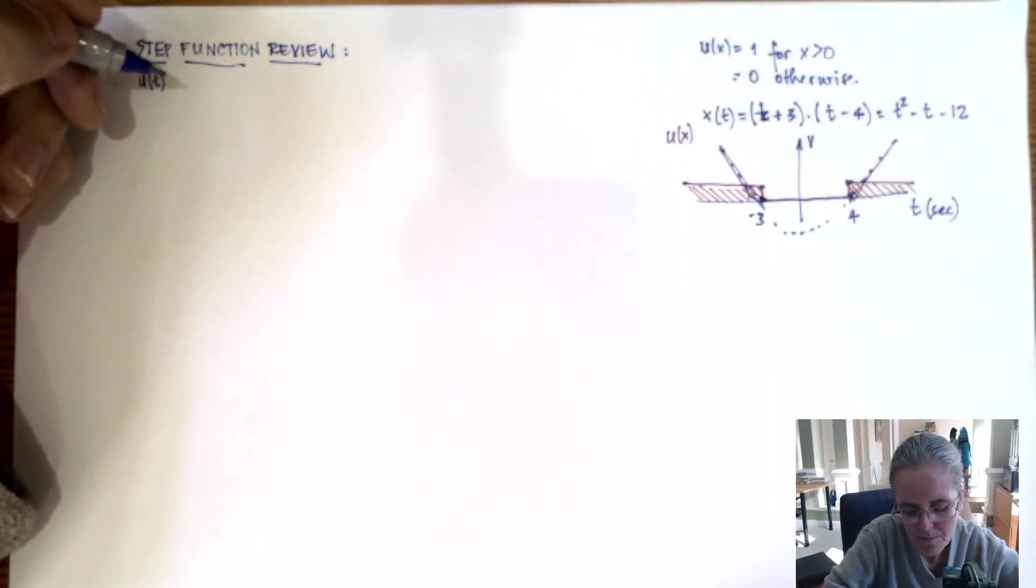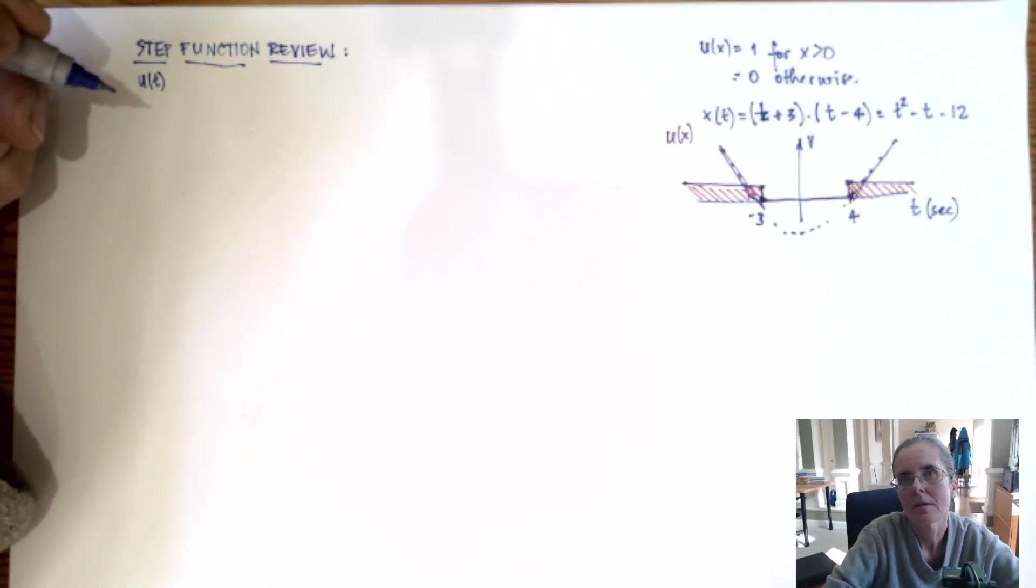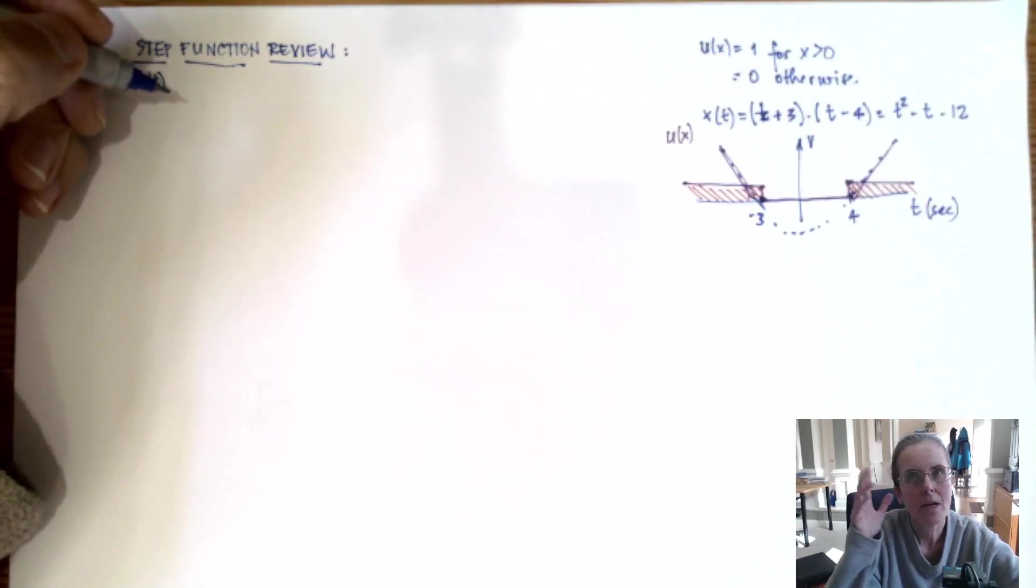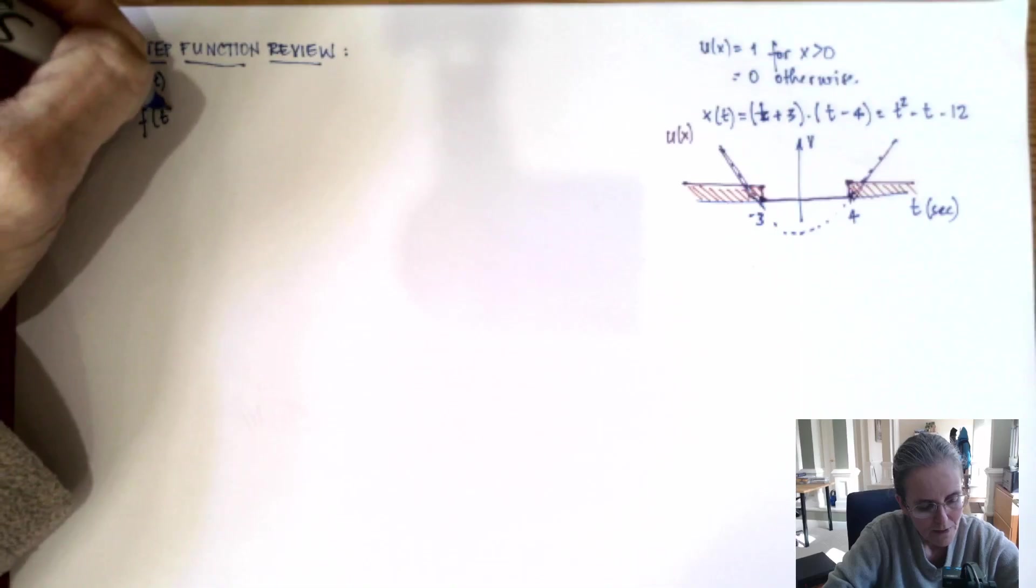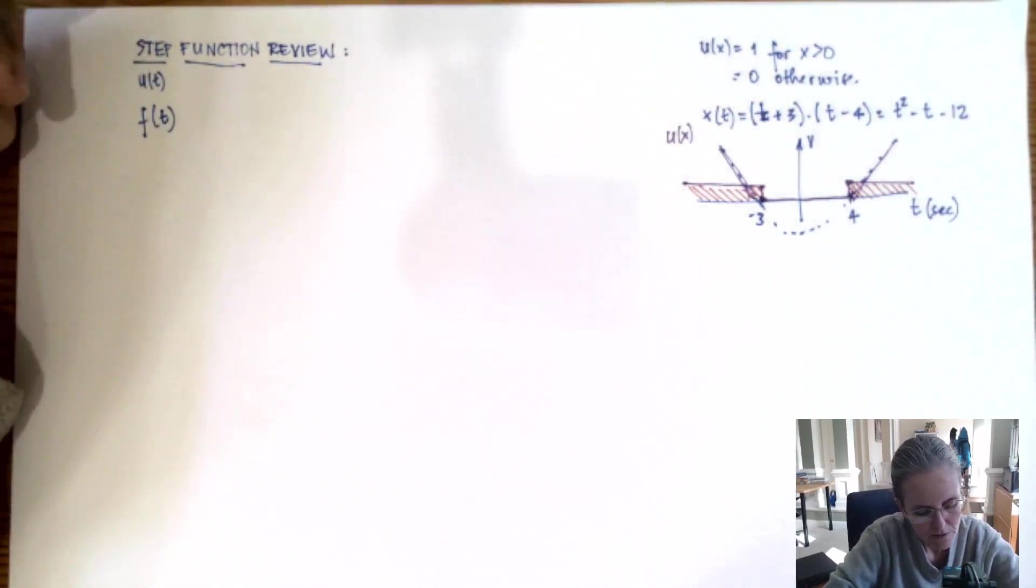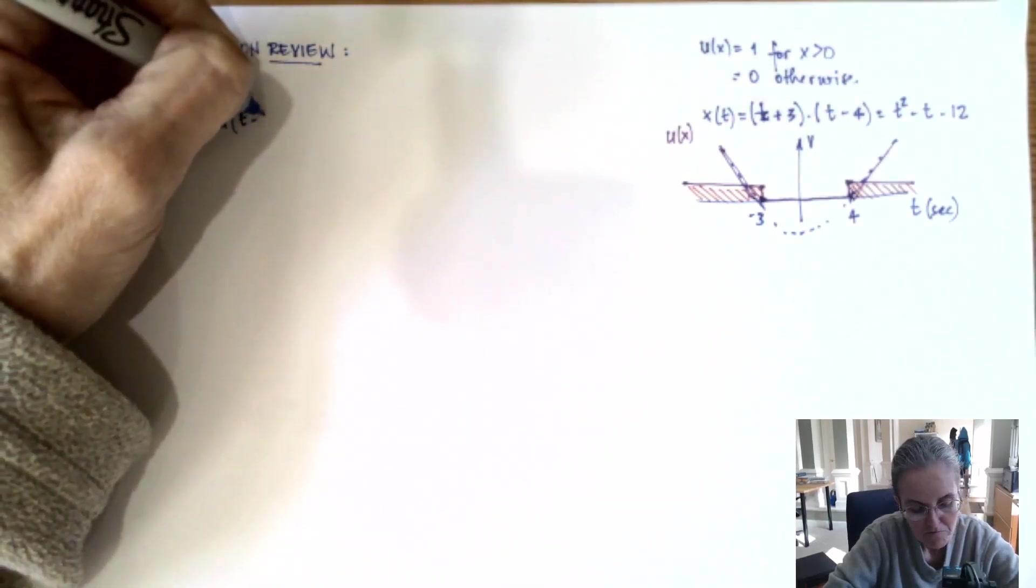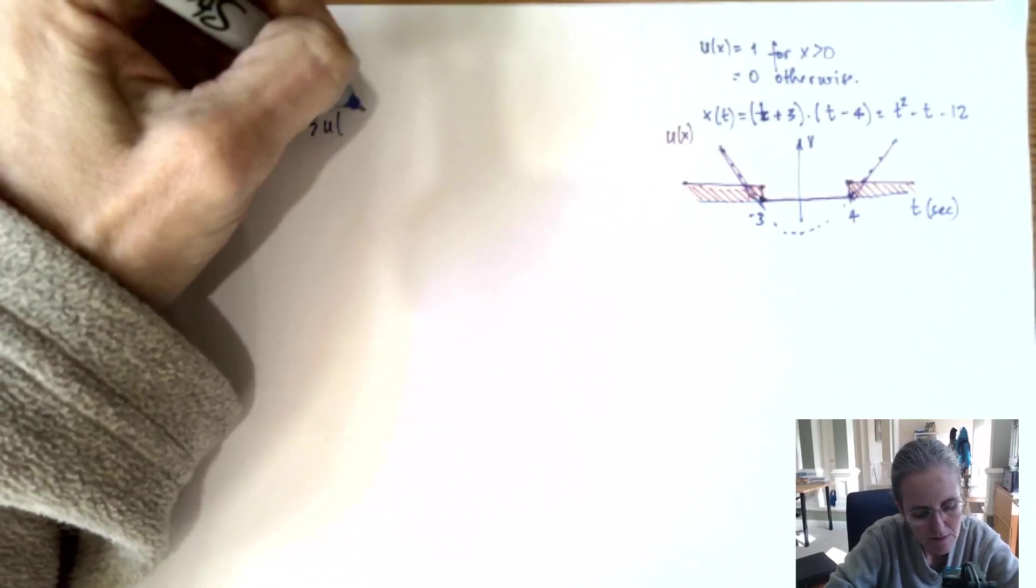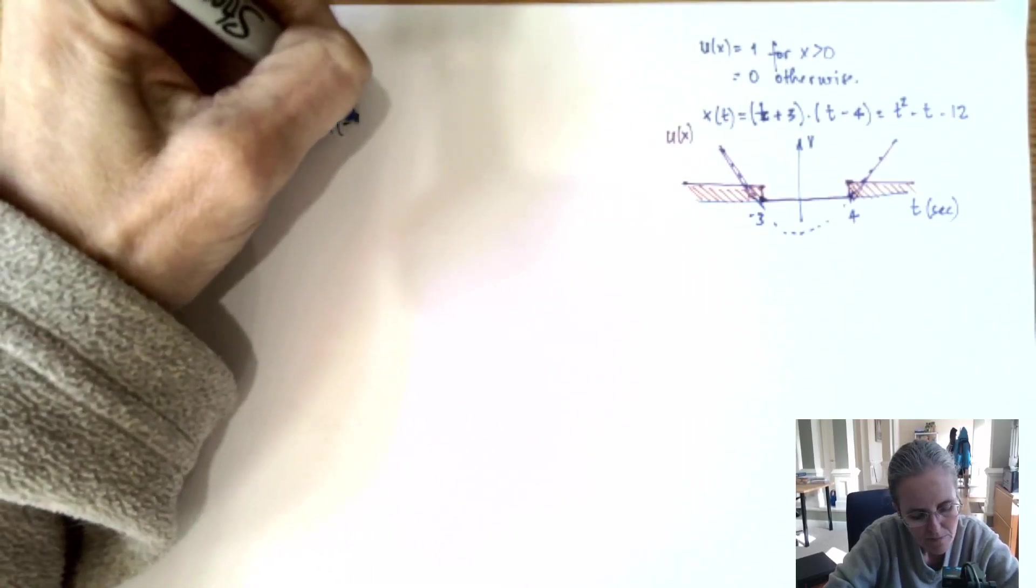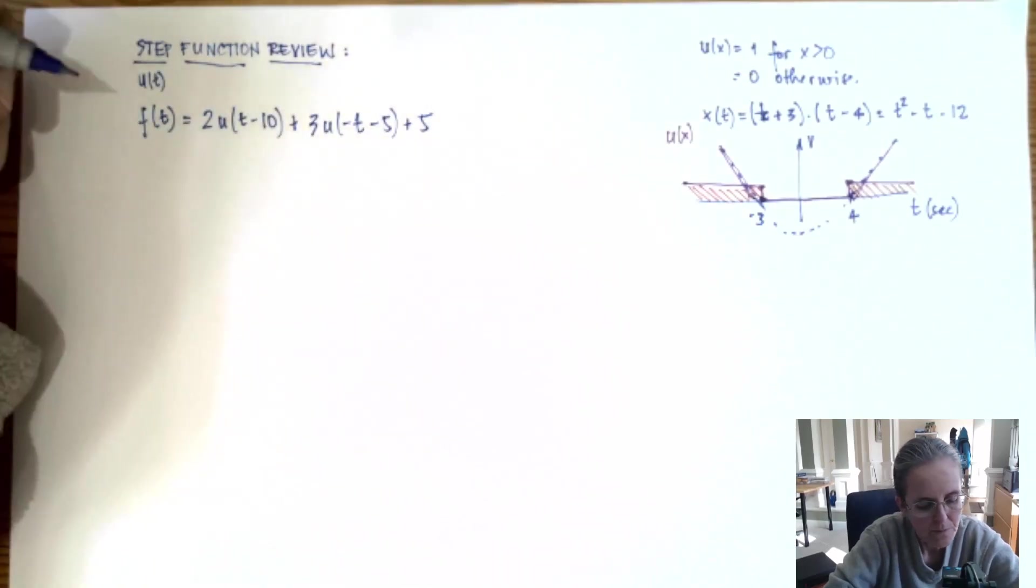The question the student had was how do I do if you give us two functions added or subtracted and a scalar. Let's say I ask you to plot a function of time that's like 2u(t-10) plus 3u(-t-5) plus 5.